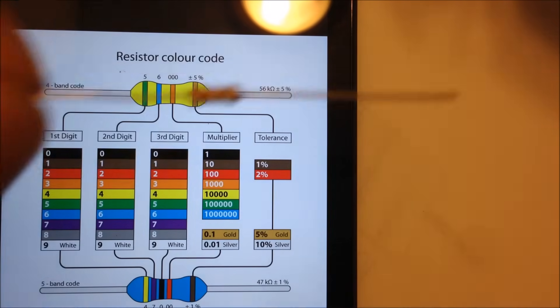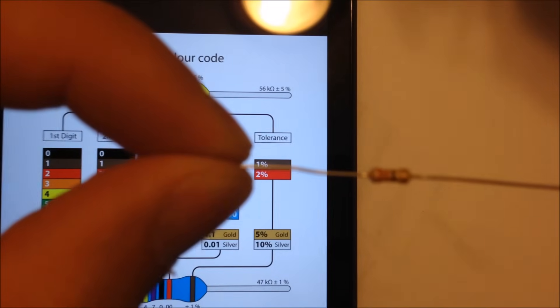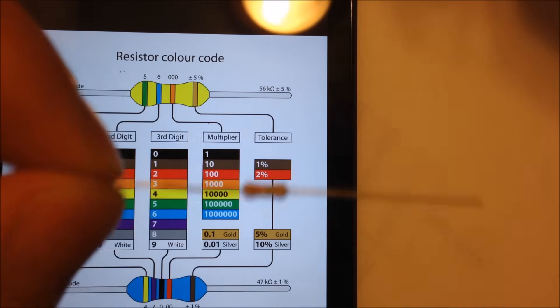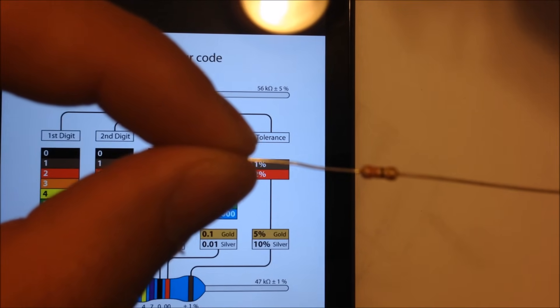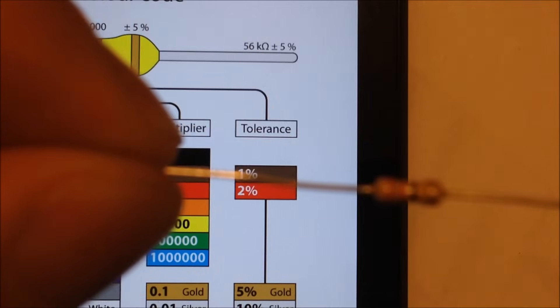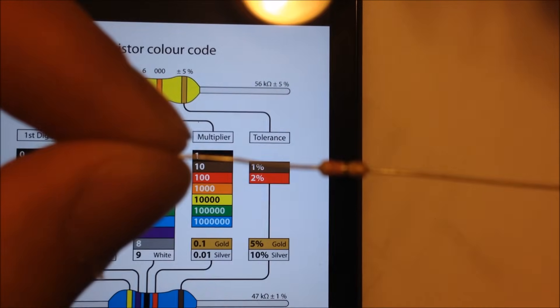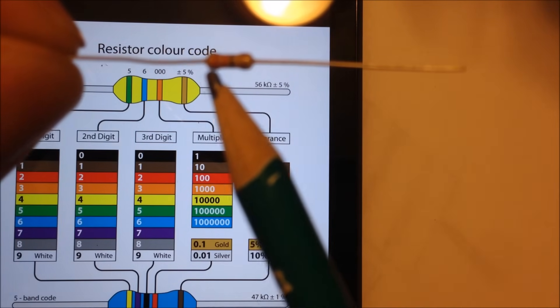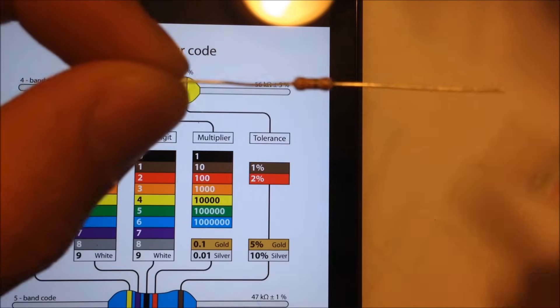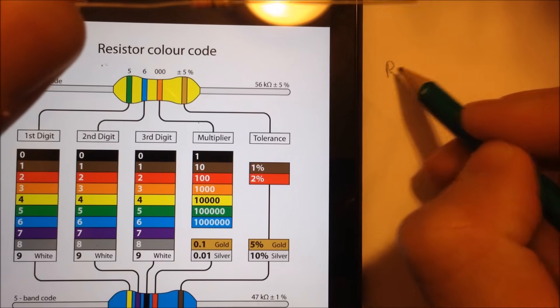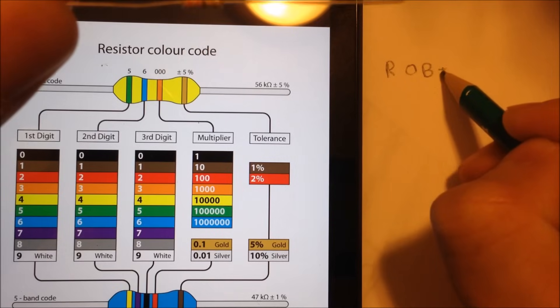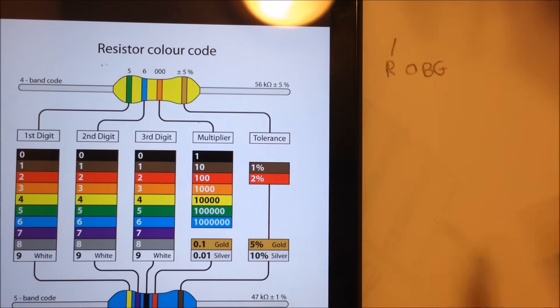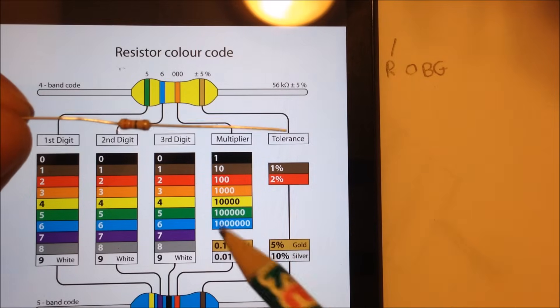For this guy here, we can zoom in on it or focus the camera. This resistor I have here, the bands are red, orange, black, and gold. So I'm just gonna write that down here: red, orange, black, and gold. It's a four-band.